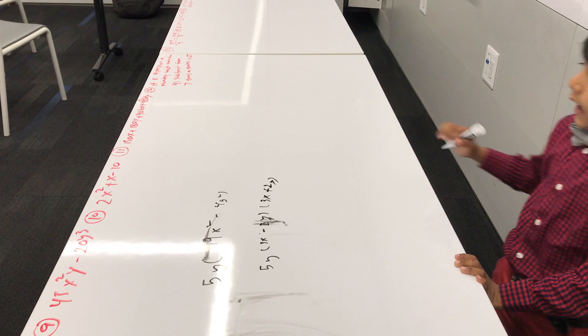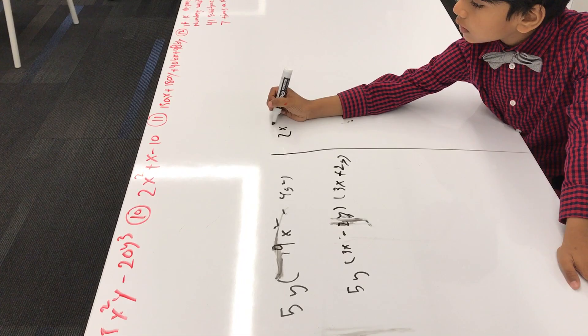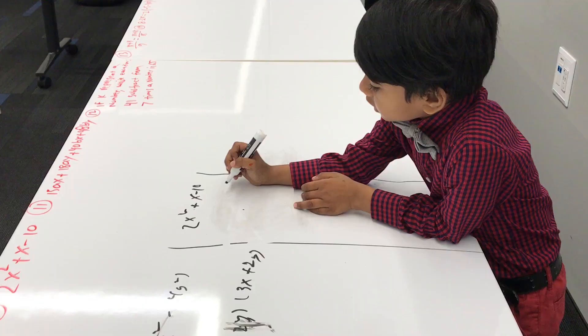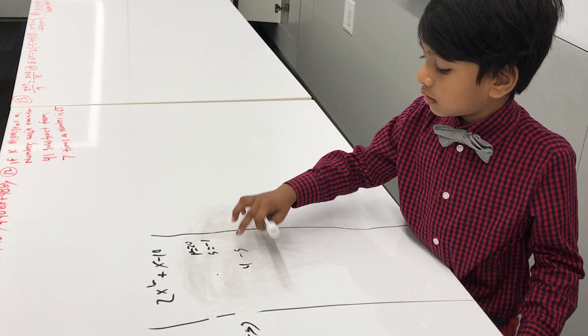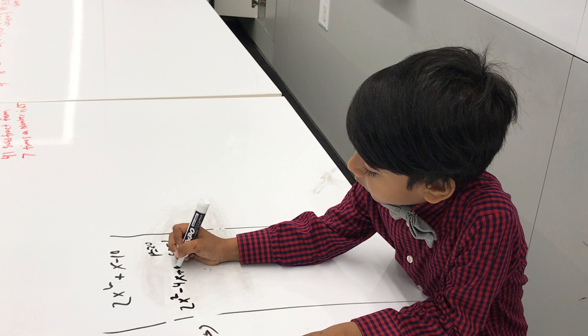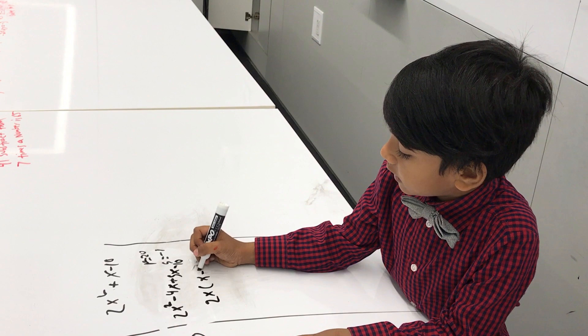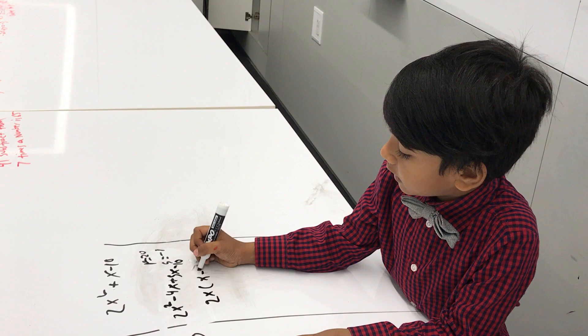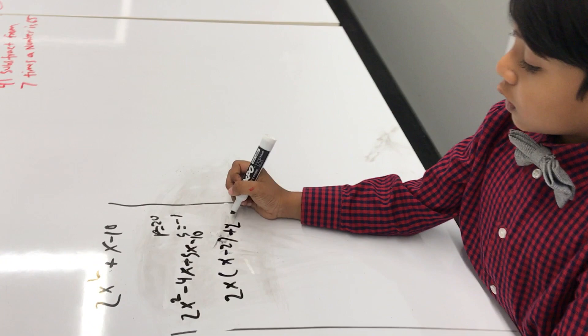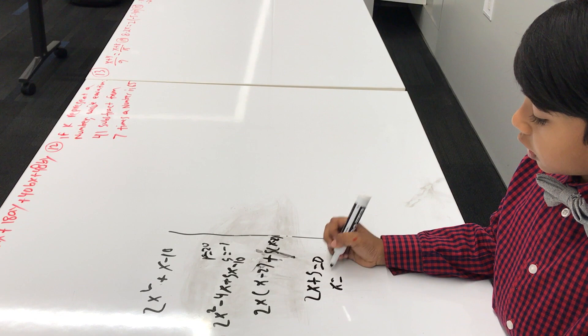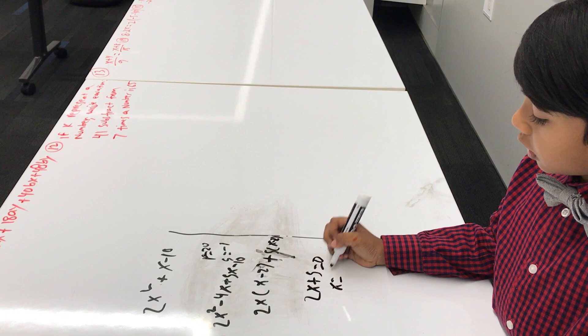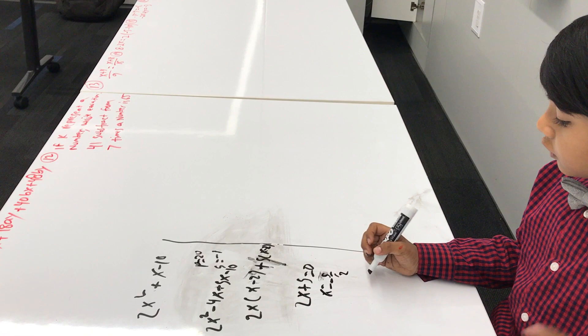Number 10: 2x² — the product is 20 and the sum is minus 1. So there are two numbers that make this: minus 4 and plus 5. So: 2x² minus 4x plus 5x minus 10. The factors are 2x(x minus 2) plus 5(x minus 2). So 2x plus 5 equals 0: x equals minus 5 over 2. And x minus 2 equals 0: x equals 2.